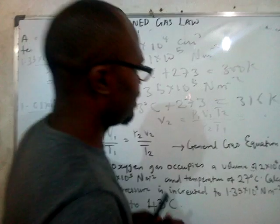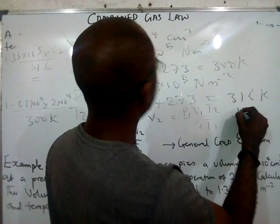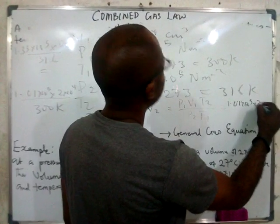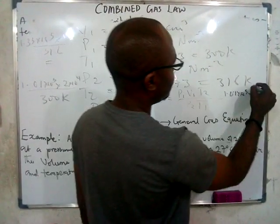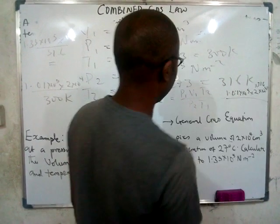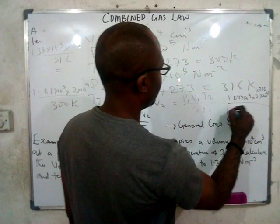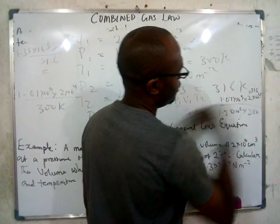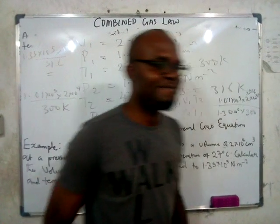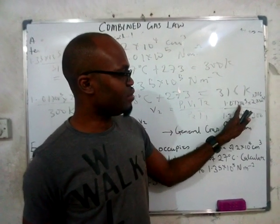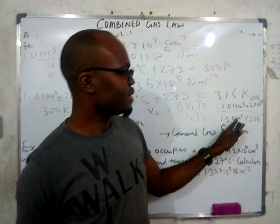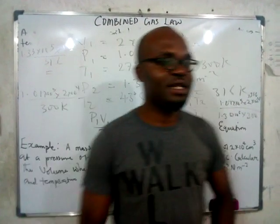Substituting the values: V2 = (1.01 × 10⁵ × 2 × 10⁴ × 316) / (1.35 × 10⁵ × 300). Multiply this out and whatever you get on your calculator is your answer.